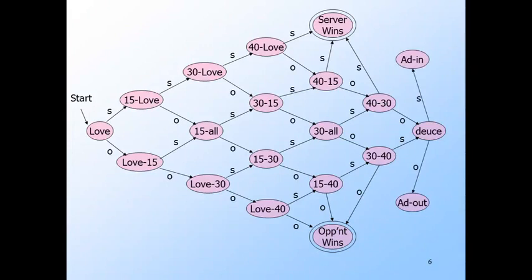Next, consider what happens in deuce. You have to win by two points, so it is impossible for either player to win immediately. If the server wins the next point, they are ahead by one point, although we don't know how many points in total have been played. The strange name for this state is add-in, or advantage-in. In refers to the server. Symmetrically, if the opponent wins in state deuce, we go to state add-out. The out refers to the opponent.